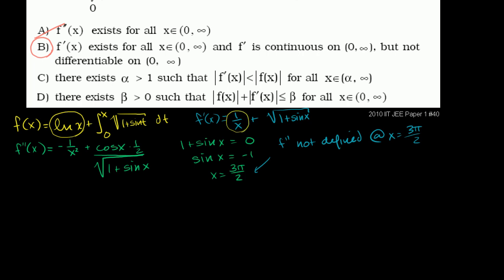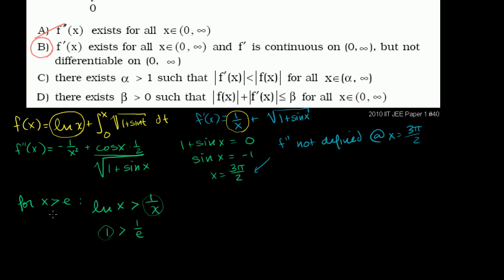We want a threshold above which natural log of x is always larger than 1 over x. The easy number to work with is e. For x greater than e, natural log of x is greater than 1 over x. At x equals e, natural log of e equals 1, which is clearly greater than 1 over e, approximately 1/2.71. As x increases beyond e, natural log of x grows larger while 1 over x shrinks. So for x greater than e, natural log of x is definitely greater than 1 over x.